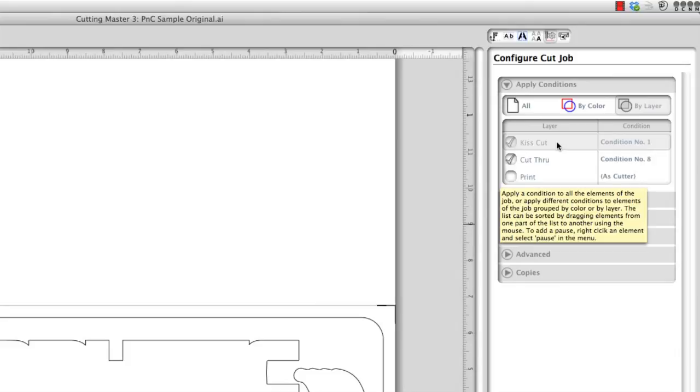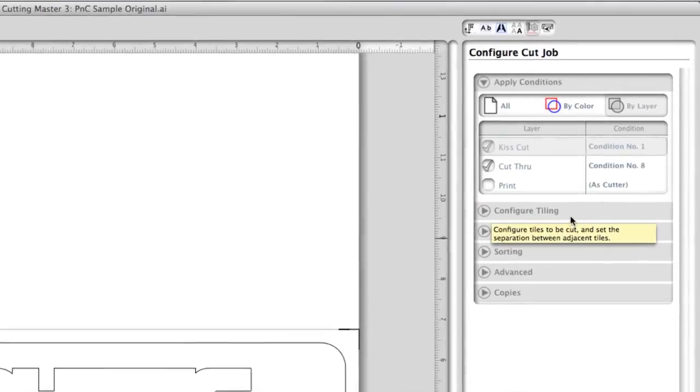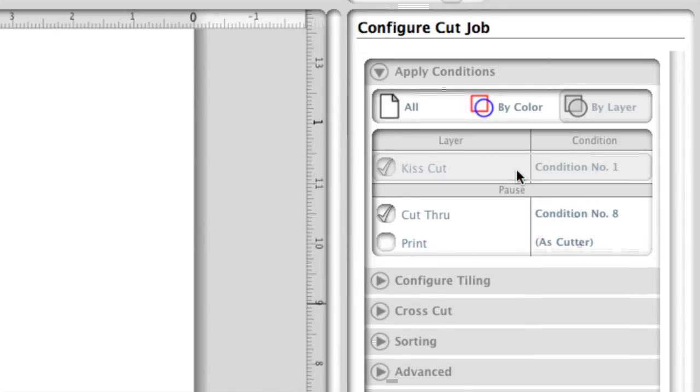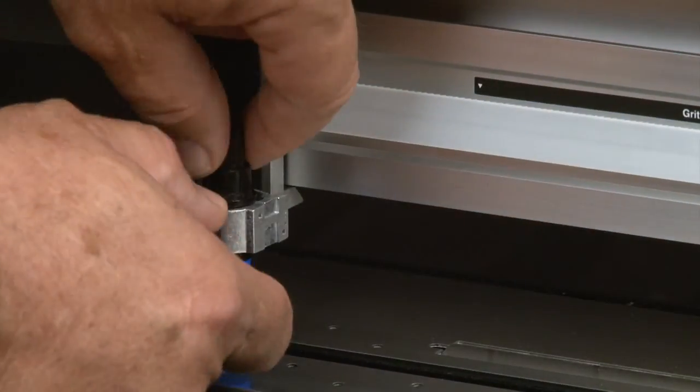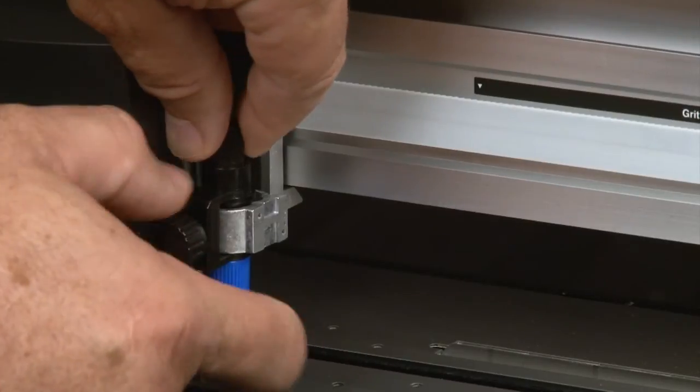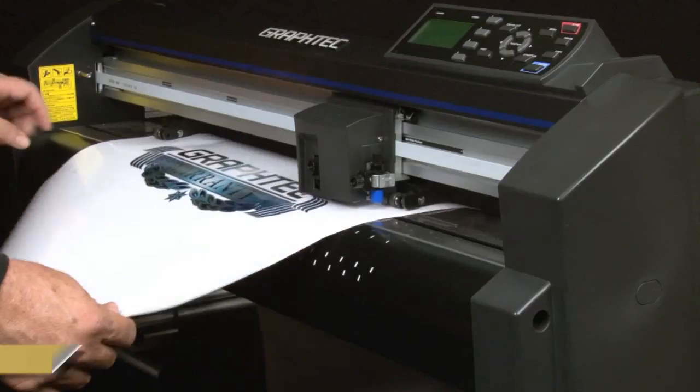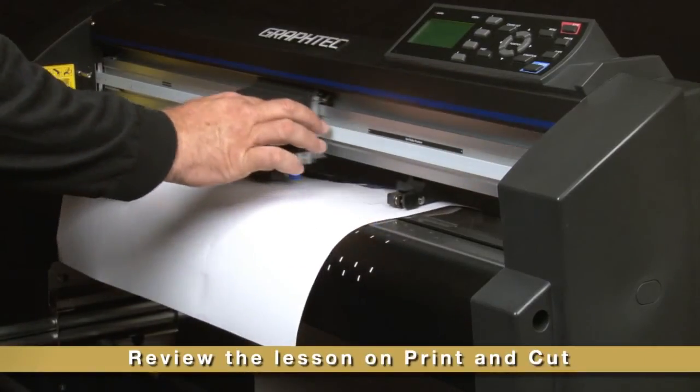The last step for the software is to place a pause between the kiss cut layer and the cut through layer. This is done by right clicking between the layers and then selecting add pause. It will cut the kiss cut layer first, so the blade holder will have to be switched to the back slot or tool 1. Now load the graphic if you haven't already done so.